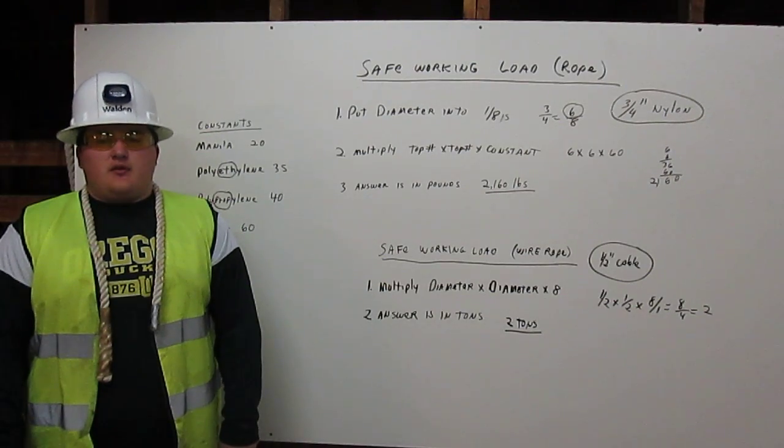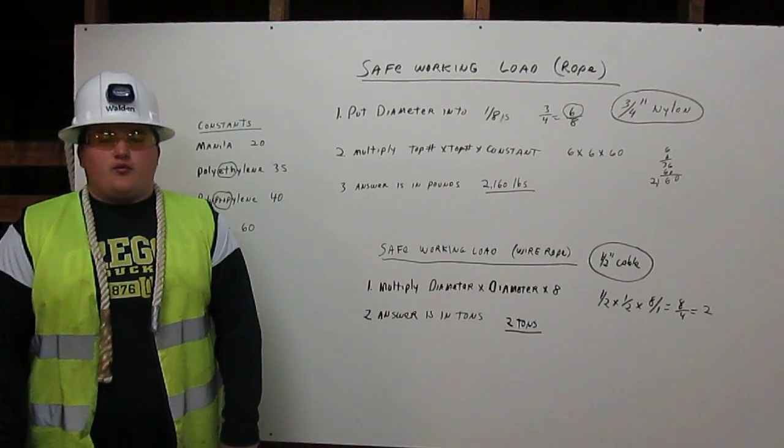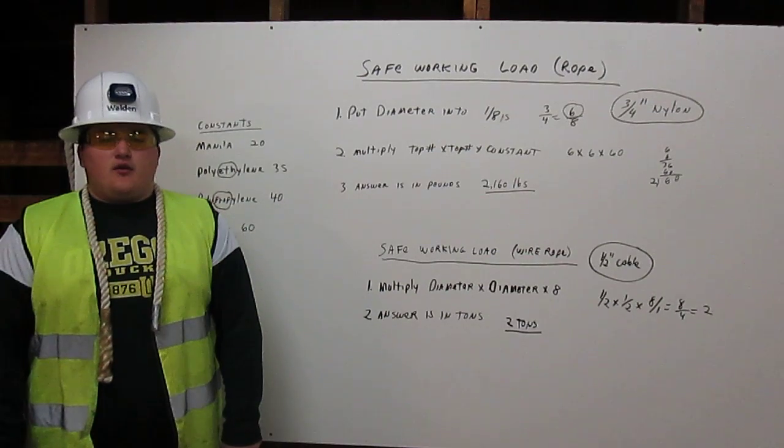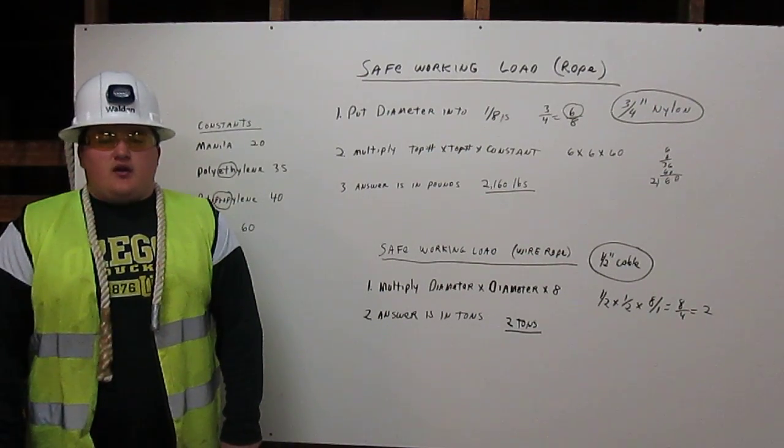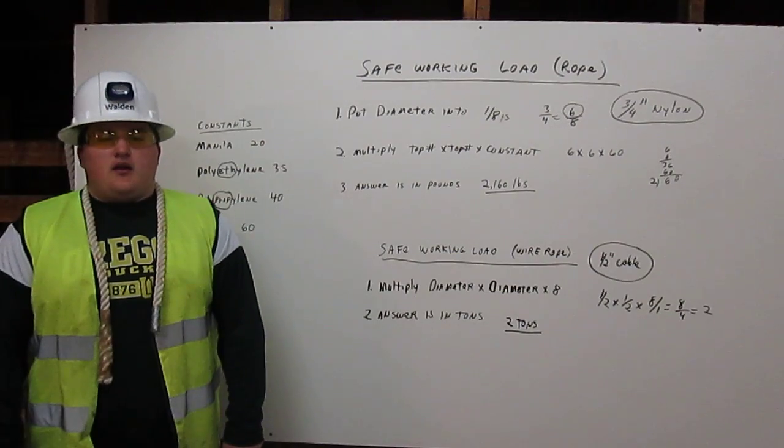I'm going to explain how to determine the safe working load for rope. This safe working load is a number that represents one-fifth of the rigging capacity. Let me explain.